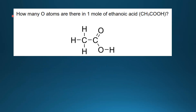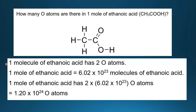Next we'll have a look at some examples using the mole concept. The first example is: how many oxygen atoms are there in one mole of ethanoic acid? Ethanoic acid has the formula CH3COOH. As you can see, one molecule of ethanoic acid has two oxygen atoms. The question is asking how many oxygen atoms are there in one mole of ethanoic acid — one molecule of ethanoic acid has two oxygen atoms, one here and one here.